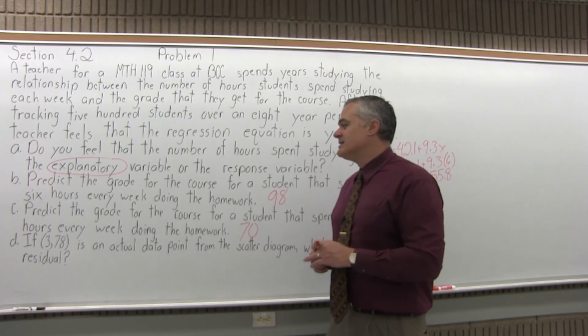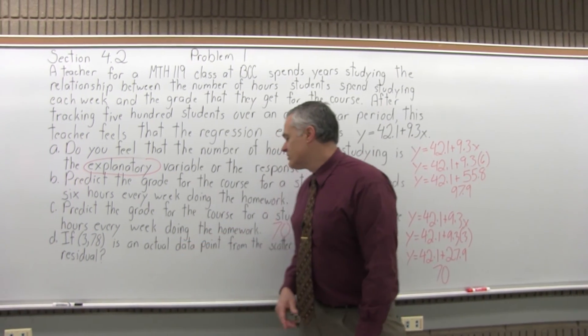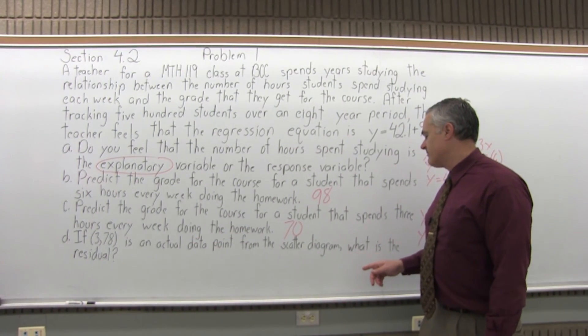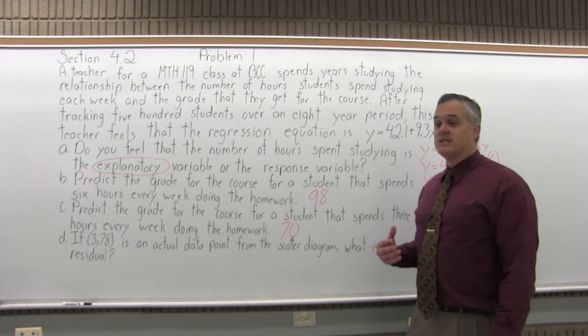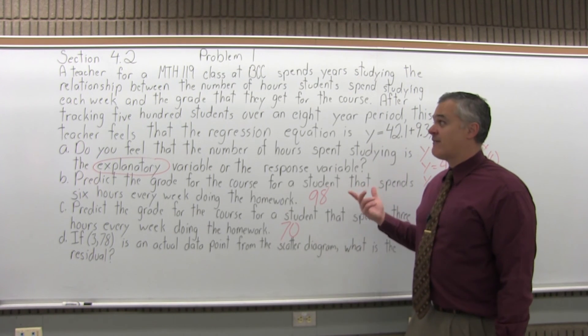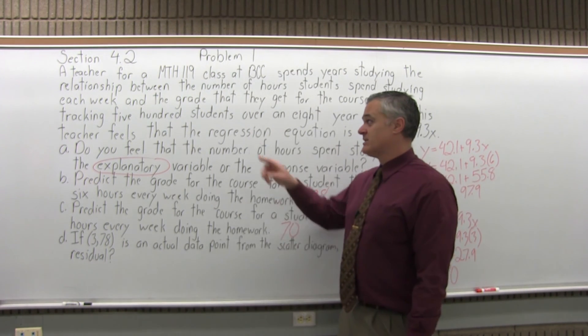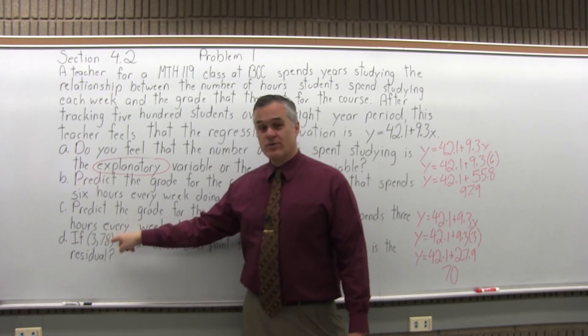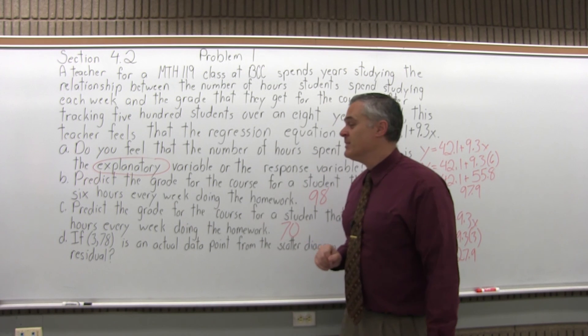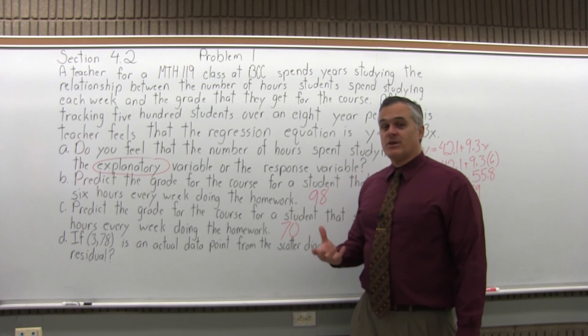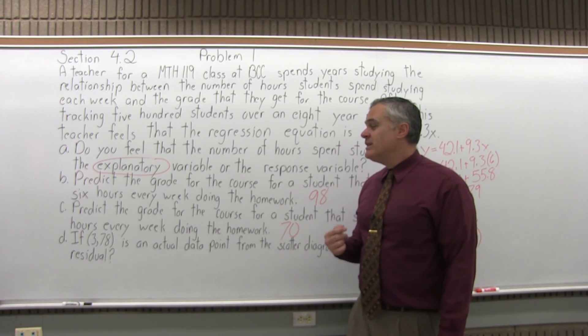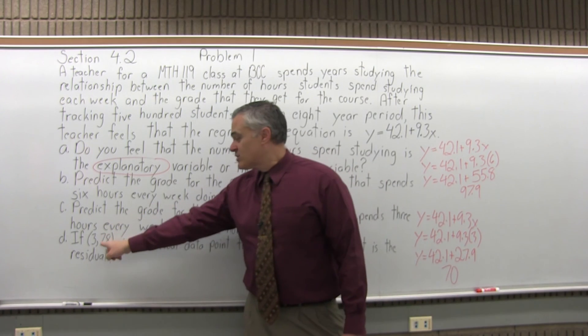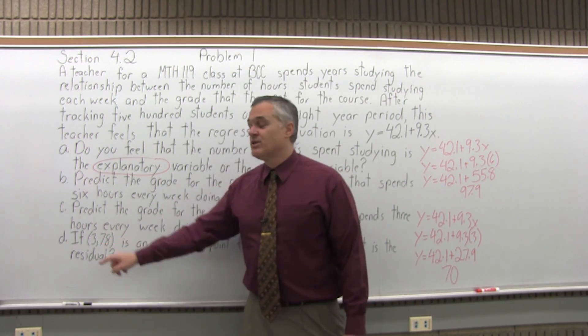Part D says if 3 comma 78 is an actual data point from the scatter diagram, what is the residual? So this scatter diagram would have 500 points on it, because the teacher tracked 500 students. One of those 500 points is over three, up 78. That's the point on the diagram. So the residual, what they're asking you is, what's the difference between the predicted value and the actual value of one of the data points?